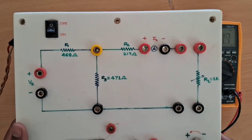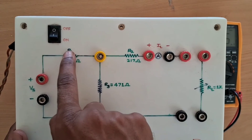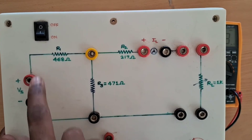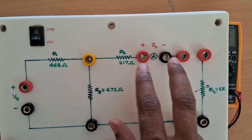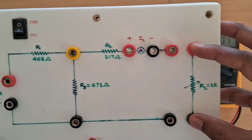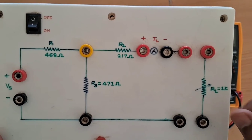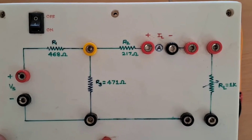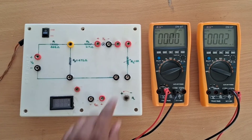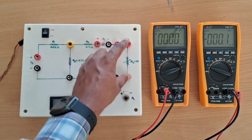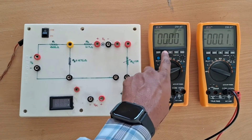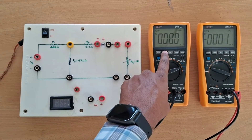We are using a T-type network for this experiment, which has three different resistors and connectors for connecting the power supply. An ammeter will be connected in the circuit, and the load is kept variable so we can increase it and observe changes in power. To measure load resistance we need an ohmmeter, and to measure load current we need an ammeter.